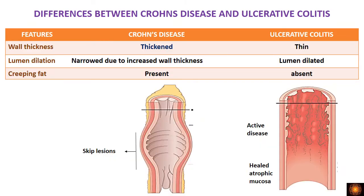We will now go from outside the intestine to the mucosal surface. In Crohn's disease, there is hyperplasia of the muscularis, so the wall is thickened, whereas in ulcerative colitis the wall is thinned out. Because of the increased wall thickness in Crohn's, the lumen is narrowed.